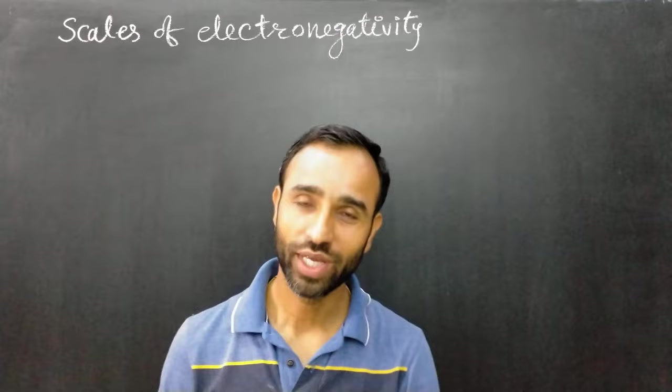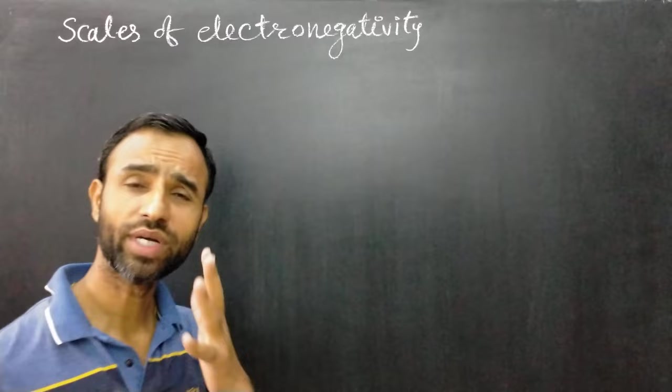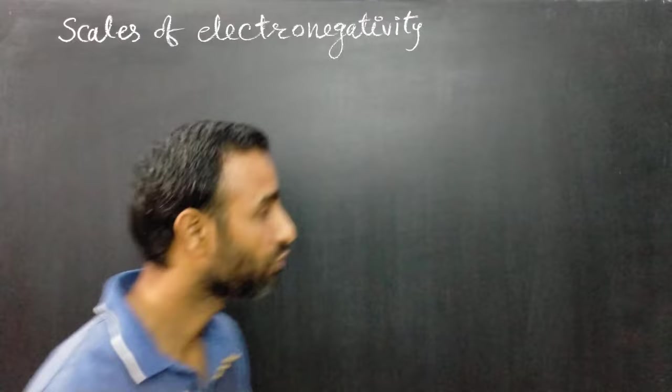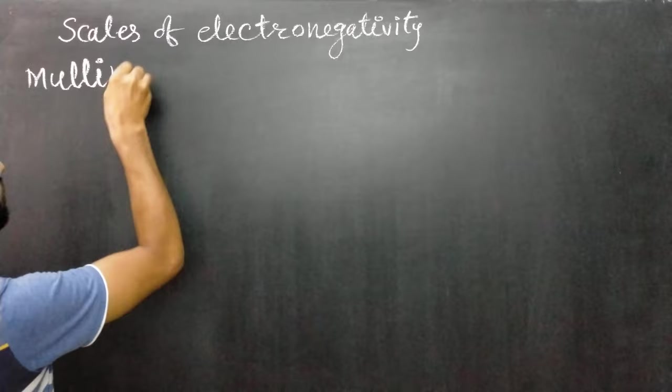Actually, there is no direct method to measure electronegativity, but by using these scales, we can measure the electronegativity value. The first method is the Mulliken scale.